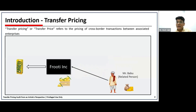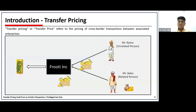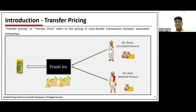Further extending the example, we have Mr. Ramu, who is not related to Fruity INC. Mr. Ramu also has an orchard and supplies mangoes, and for supplying these mangoes, Mr. Ramu gets a consideration of Rs. 2000 per box. Now it is clearly identifiable that the consideration Mr. Bahu receives is quite less than what Mr. Ramu is earning.